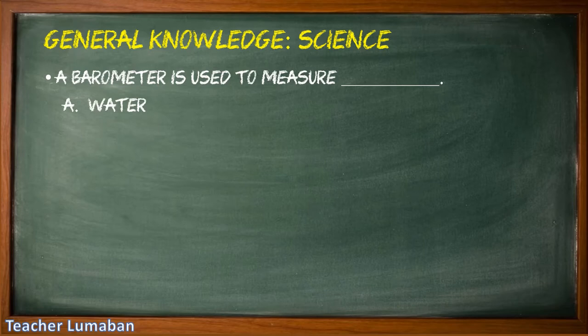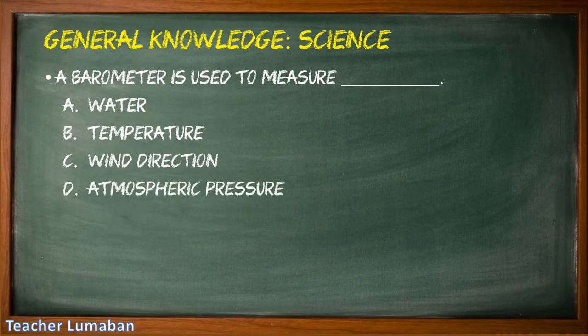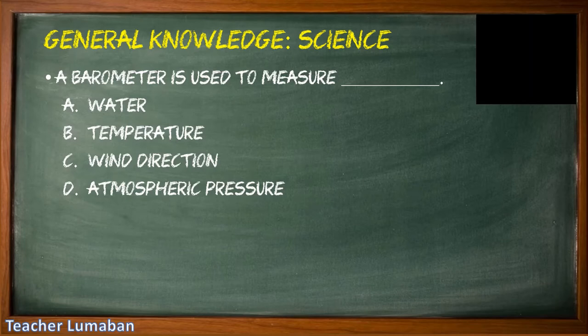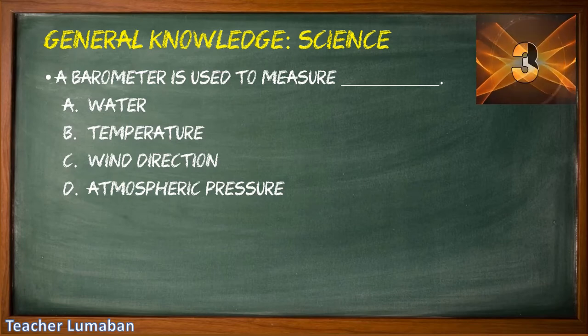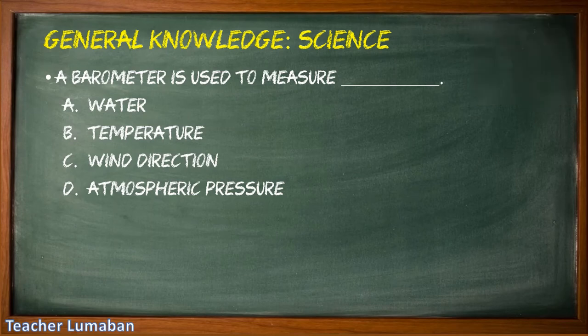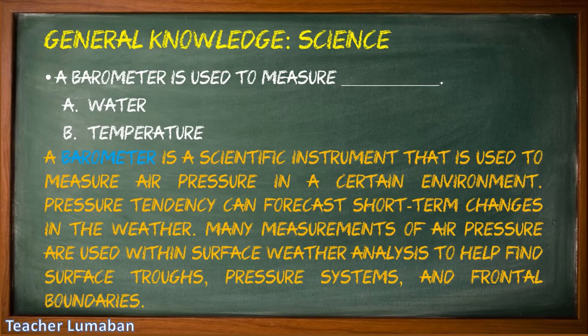A barometer is used to measure blank. Letter A: water, Letter B: temperature, Letter C: wind direction, Letter D: atmospheric pressure. The correct answer is: a barometer is used to measure atmospheric pressure. A barometer is a scientific instrument used to measure air pressure in a certain environment. Pressure tendency can forecast short-term changes in the weather; many measurements of air pressure are used within surface weather analysis to help find surface troughs, pressure systems, and frontal boundaries.